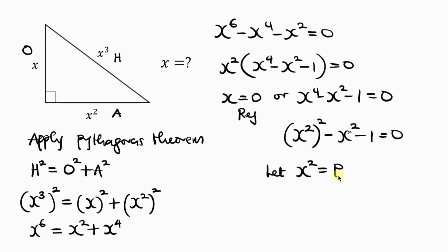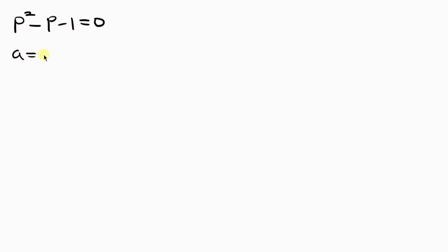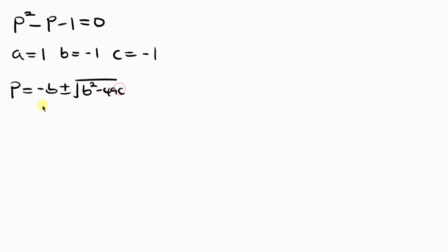Since X squared is common, wherever I see X squared I'm going to be putting P. So this becomes P squared minus P minus 1 equal to 0. This is a quadratic equation that we're going to solve using the general formula. From this quadratic equation, A is 1 — the coefficient of P squared — B is negative 1 — the coefficient of P — and C is negative 1, the constant term. So P from the general formula is equal to negative B plus or minus the square root of B squared minus 4AC, divided by 2A.